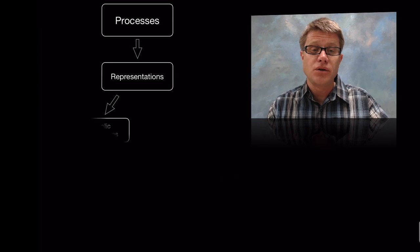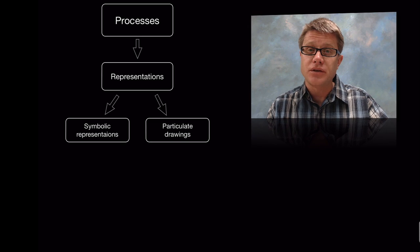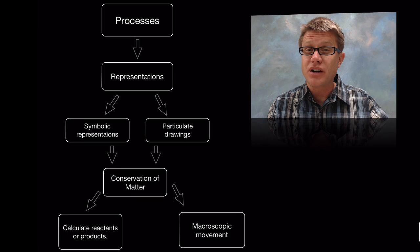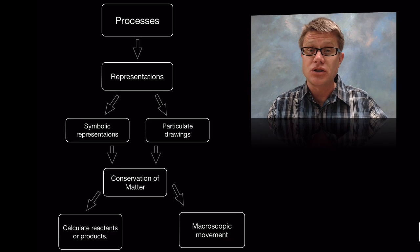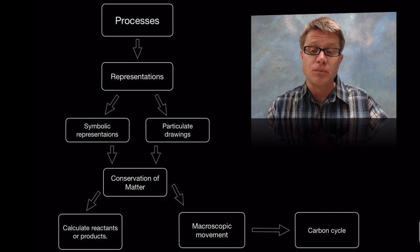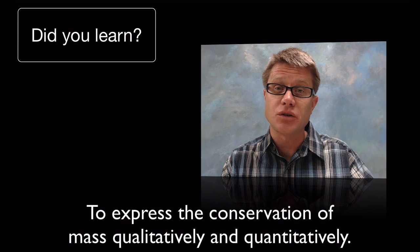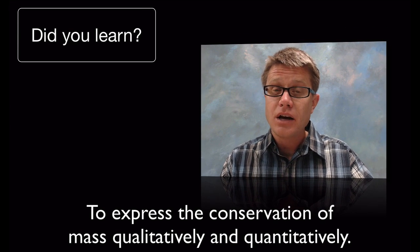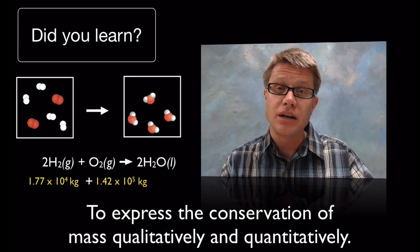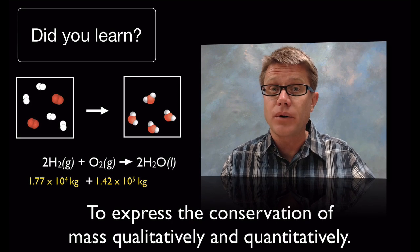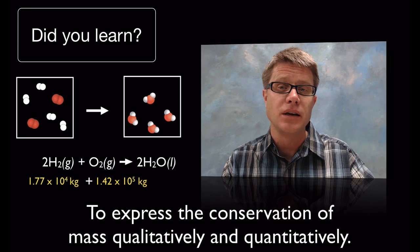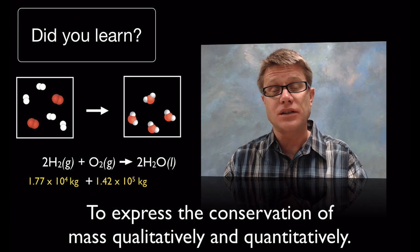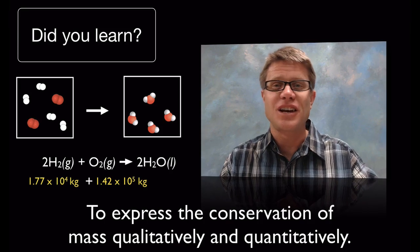In review, we can use representations—both symbolic and particulate drawings—to show this conservation of mass. The problems are very simple, but we can also use it to measure large macroscopic movement. Did you learn to express the conservation of mass qualitatively and quantitatively? Qualitatively we could do that through particulate drawings or chemical equations. But if we want to do it quantitatively, we actually have to measure the mass before and relate that to the mass after, or vice versa. I hope that was helpful.